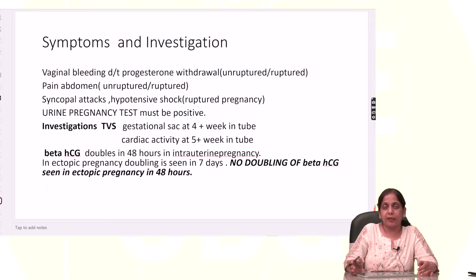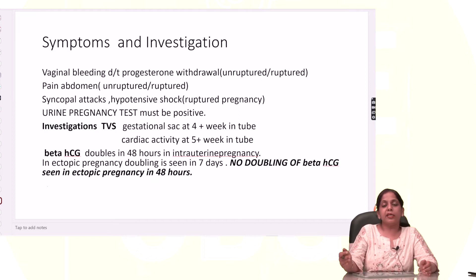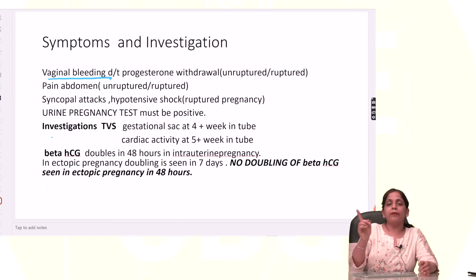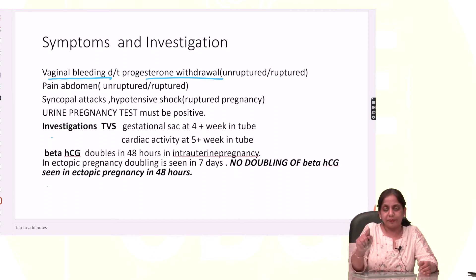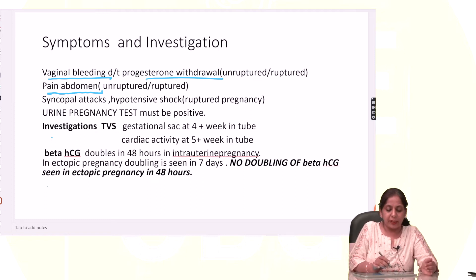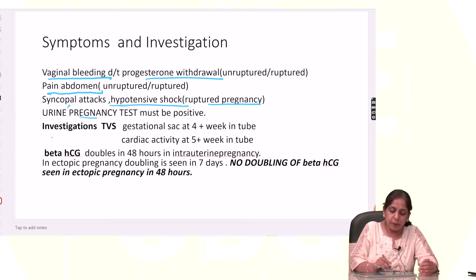The symptoms of ectopic pregnancy: the most common symptom is vaginal bleeding. Second is pain in the abdomen — pain abdomen occurs in both ruptured and unruptured tubal pregnancy. Syncopal attacks and hypotensive shock are only in ruptured cases. The urine pregnancy test is also positive.